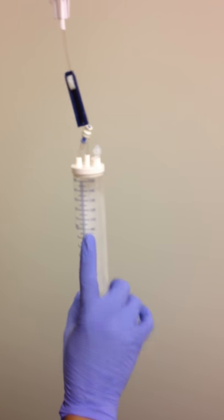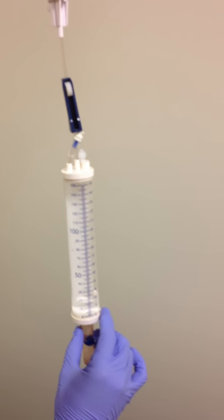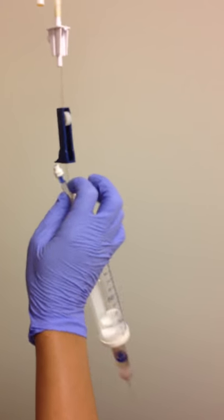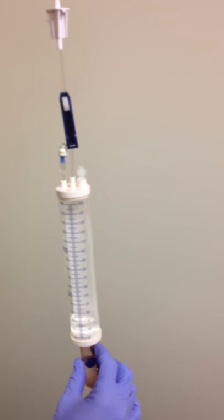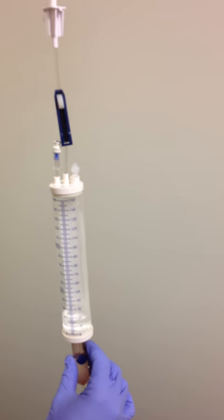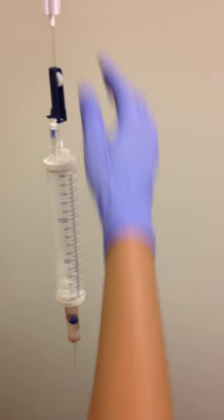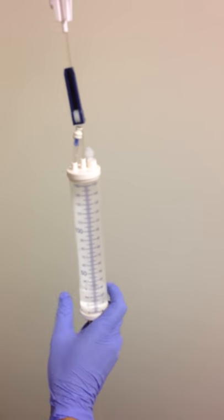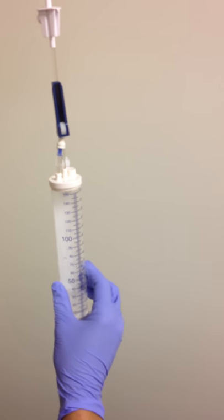Now we'll need to put 100 milliliters into the metered chamber to give our amiodarone. Our amiodarone is going to be dosed 150 milligrams in 100 milliliters of D5W. To get the 100 milliliters, we'll open the thumb wheel between the D5W and the metered dose chamber.